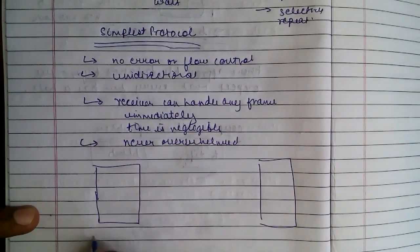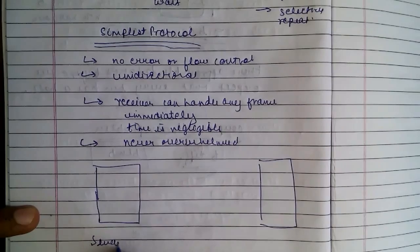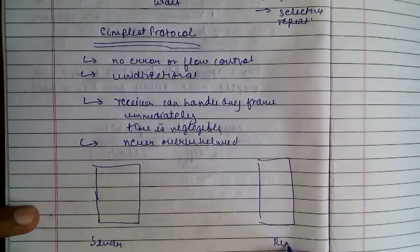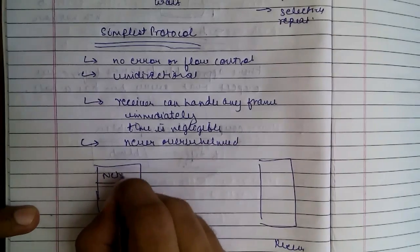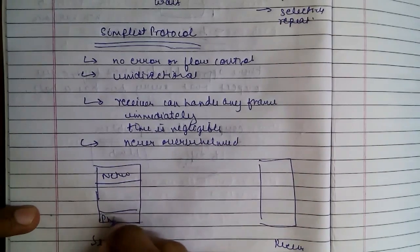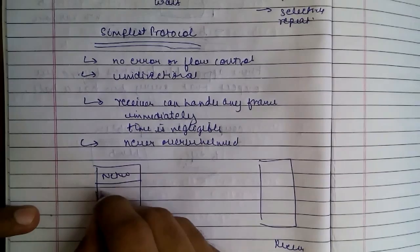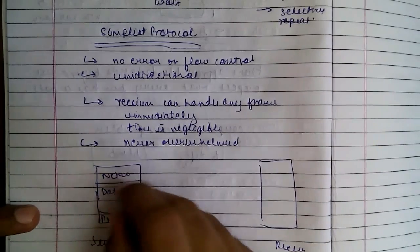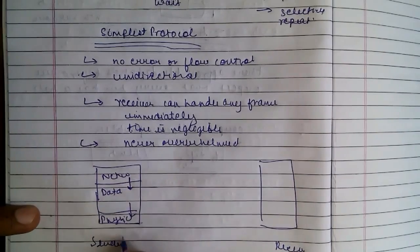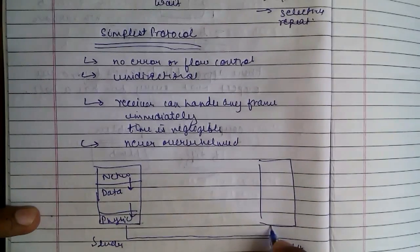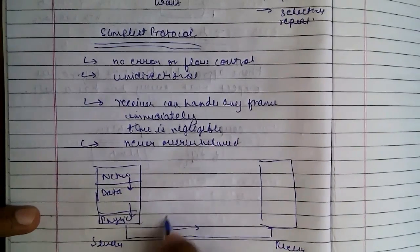This is the sender, this is the receiver and this is the network layer, this is physical, this is data. So the request comes from here, it processes, sends it to physical, the frames go, data frames.